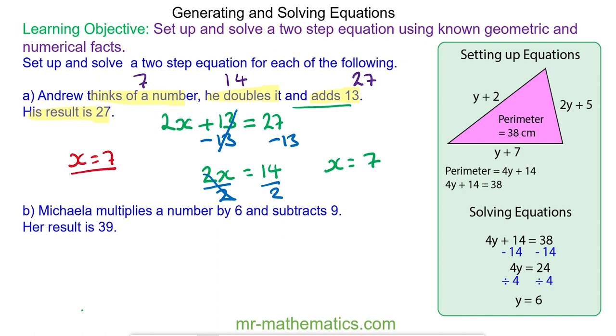For question B, Michaela multiplies a number by 6. So a number we'll call a different letter y times by 6 is 6y. And subtract 9, so 6y take away 9. Her result is 39. So this is equal to 39.